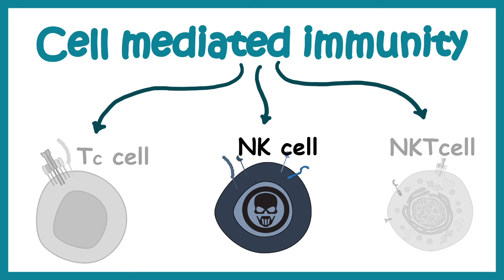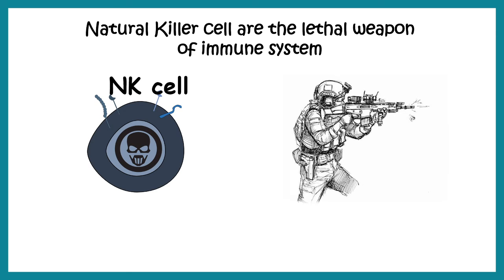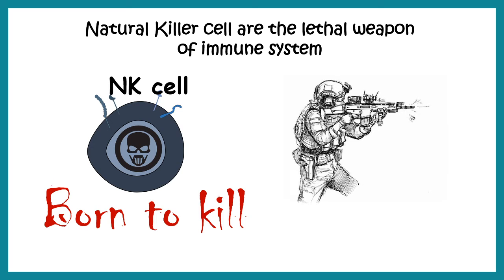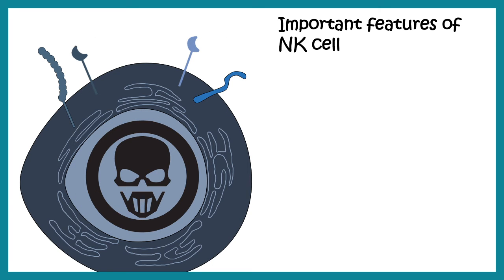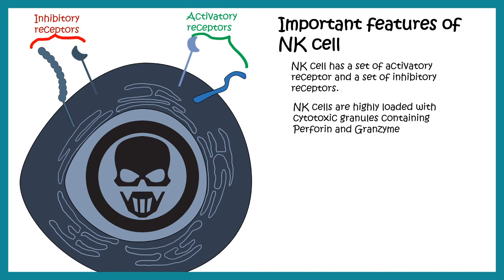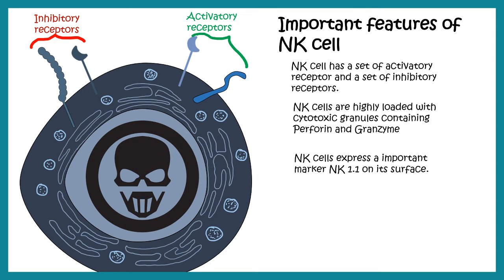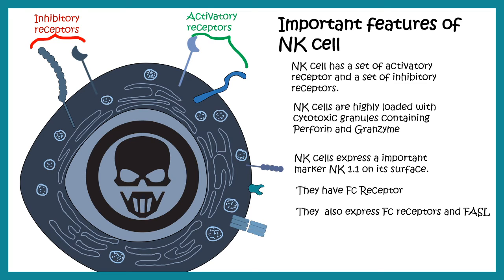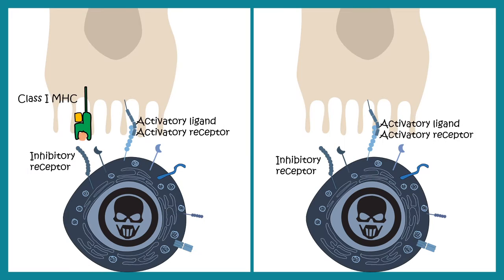Now let's talk about the second cell type in cell mediated immunity: NK cells. We can introduce NK cells as cold-blooded killers of the immune system — they are born and specialized to kill. NK cells have a set of activatory and inhibitory receptors, and are highly loaded with cytotoxic granules. They have their signature receptor NK1.1, FC receptors, and FAS or FAS ligands, engaging infected cells in a manner similar to cytotoxic T cells, but with very different detection.